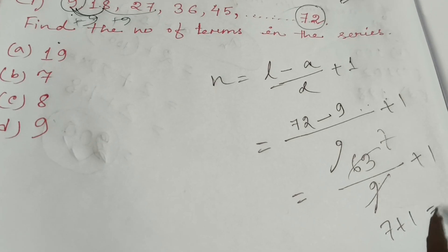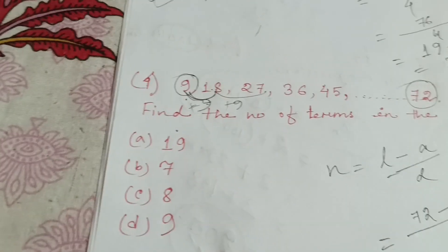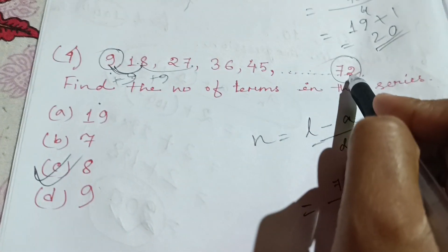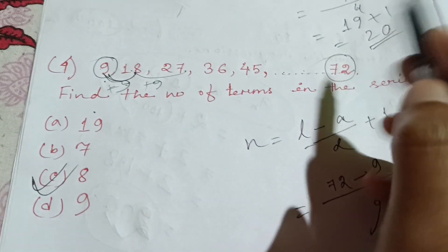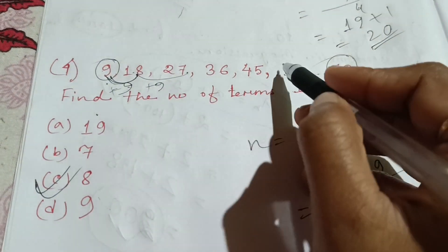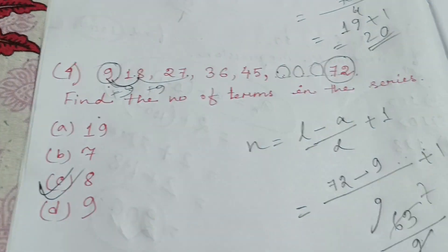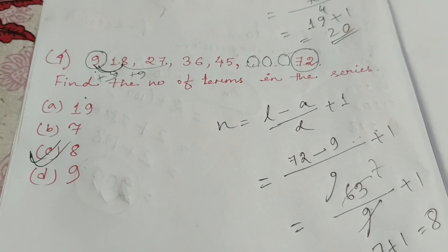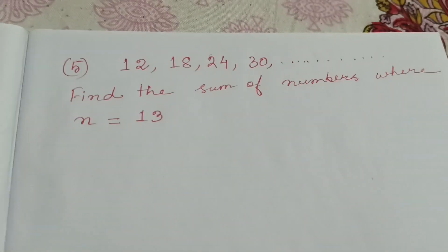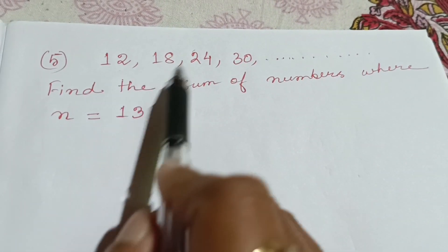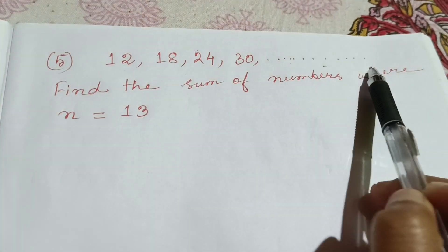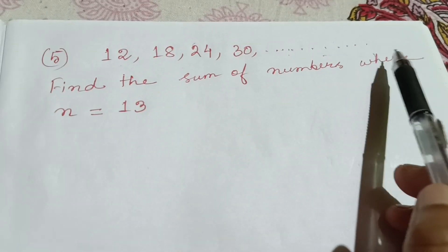7 plus 1 is equal to 8. Option is 8 as well. So we can select a total of eight — this is how it works. This is how we get the total of eight. Here is how we get the total of nine.